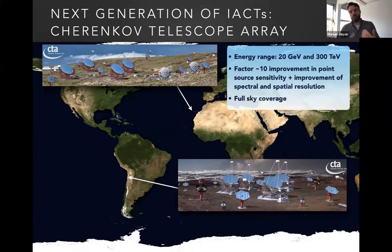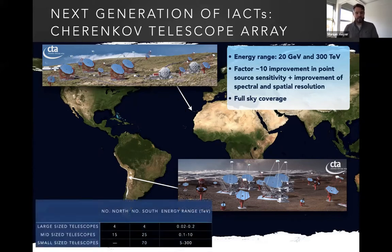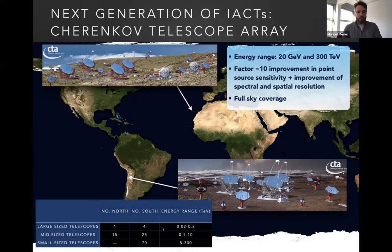In the north it's a little bit more difficult to observe the galactic center because you have to go to very high zenith angles, which gives a high energy threshold. As you can also see from the artists' impressions, the array will consist of different-sized telescopes. In the center you will have the large-sized telescopes, responsible for the low energy range. You have mid-sized telescopes covering the energy range from 100 GeV to 10 TeV. And then you have the small-sized telescopes spread out over a large area that will cover the high energy range.